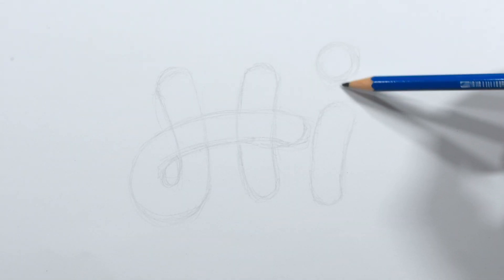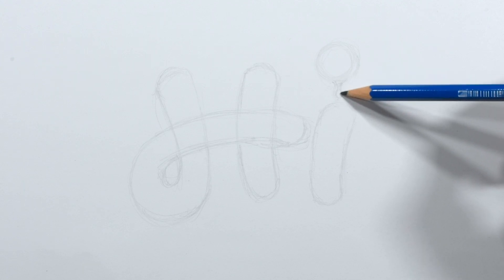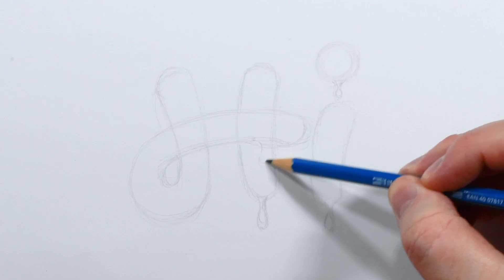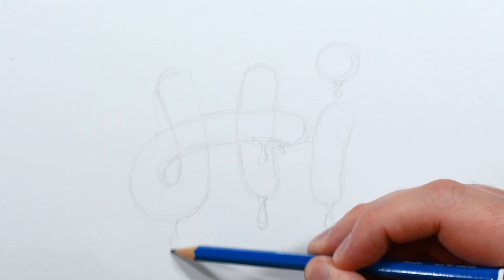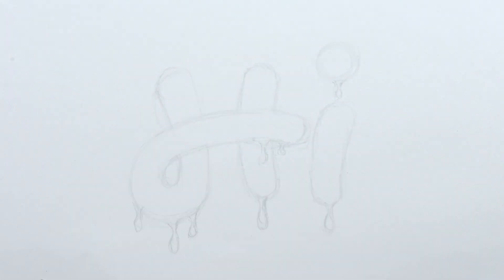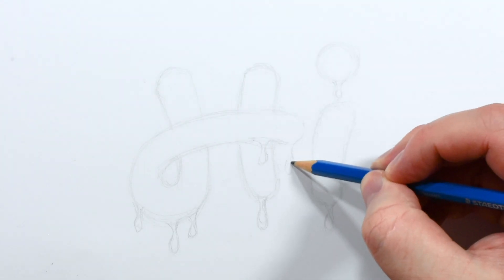After darkening a few lines I'll draw in the drips. These will fall at the lowest points of the letter shapes and they can go anywhere really so I'll randomly add a bunch throughout. Erase some lines here. You know what, let's make this drip more to balance out this side.